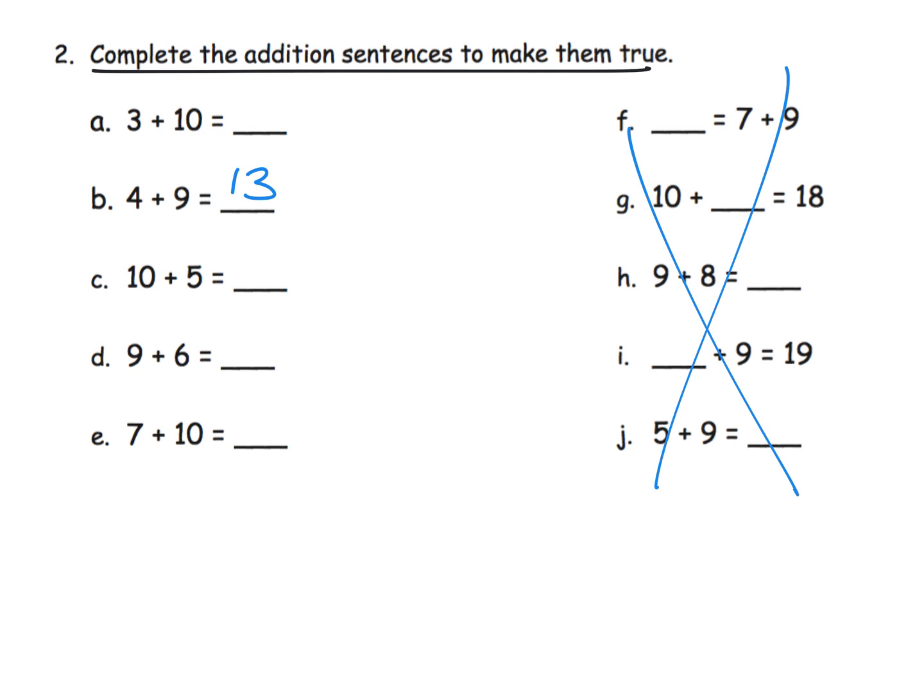We want to listen: did the kids start at 4 and then count on an additional 9 to get 13, in which case that's not a particularly efficient method? Or did the kids start with 9 and count on 4? Well, that's a little bit more efficient.